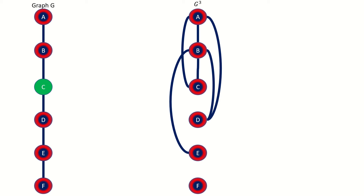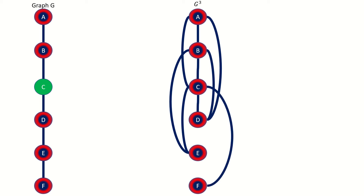Now on to vertex C. Vertex C had a distance of 1 to vertices B and D, meaning that it connects to those vertices in the third power graph. Vertex C had a distance of 2 to vertices A and E, meaning that it connects to those vertices in the third power graph. Finally, vertex C had a distance of 3 to vertex F, meaning that vertex C connects to vertex F in the third power graph.